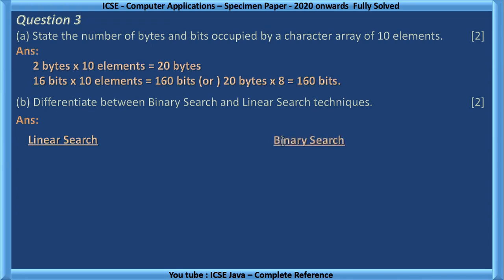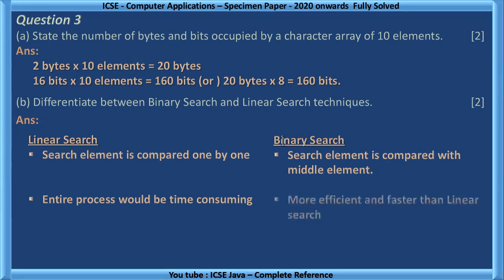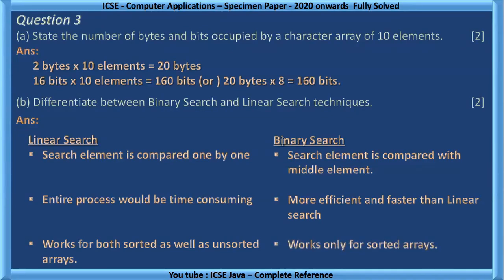Differentiate between binary search and linear search techniques. Linear search, search element is compared one by one. Binary search, search element is compared with middle element. Linear search, entire process would be time consuming. Binary search is faster than linear search, more efficient than linear search. Linear search works for both sorted as well as unsorted arrays. Binary search works only for sorted arrays. This question was asked in 2019 board paper.